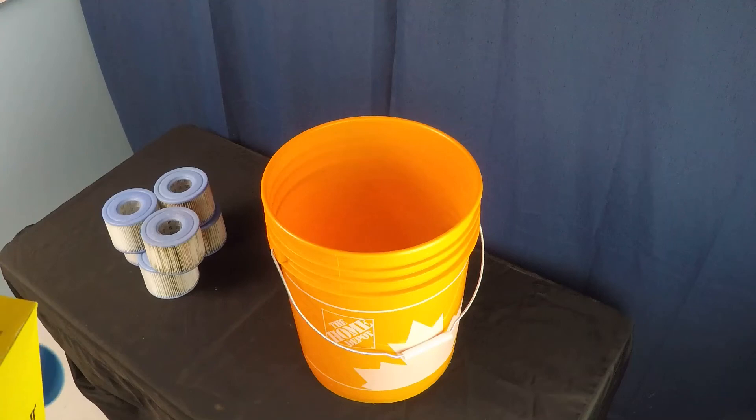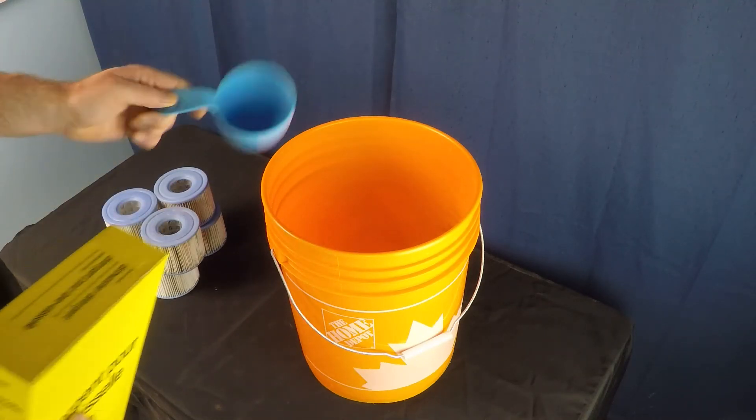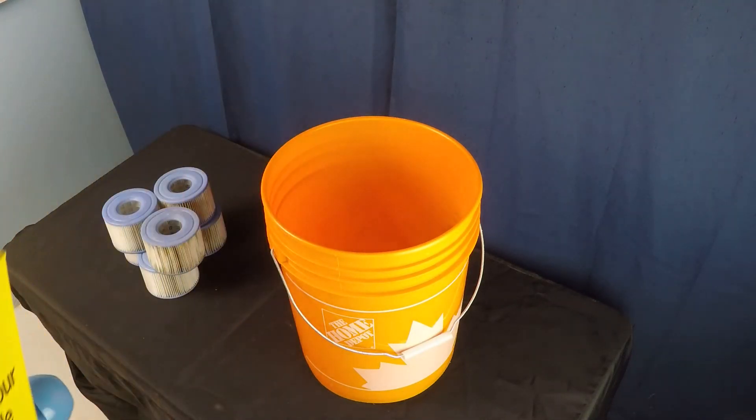So specifically what we're going to be doing here is we're going to be adding one cup of granular dishwasher detergent to a five gallon bucket filled with hot water.